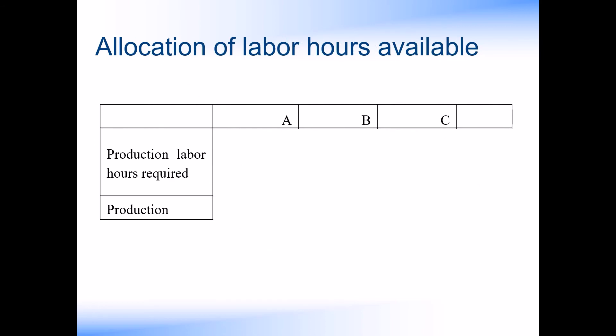We can now use this data to calculate the production plan in order to maximise the total contribution for the firm. As product B produced the highest contribution per limiting factor, we would want to allocate labour hours firstly to product B. We could produce the sales demand of 1,000 units, which would take 2,000 hours to produce.